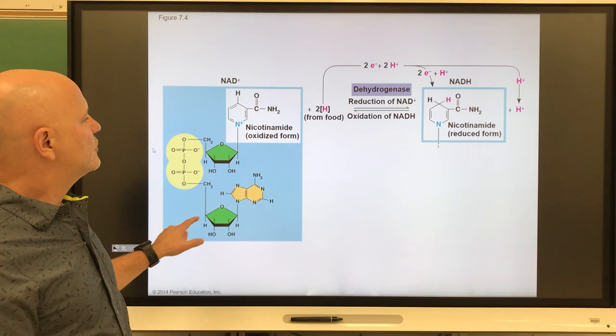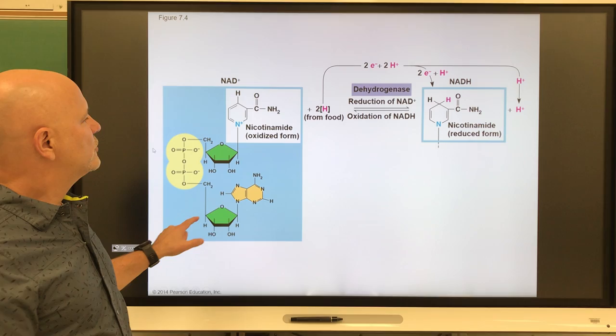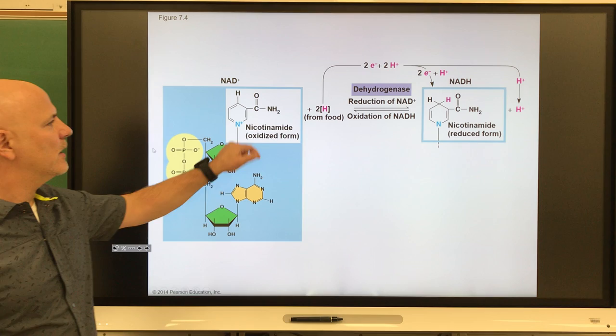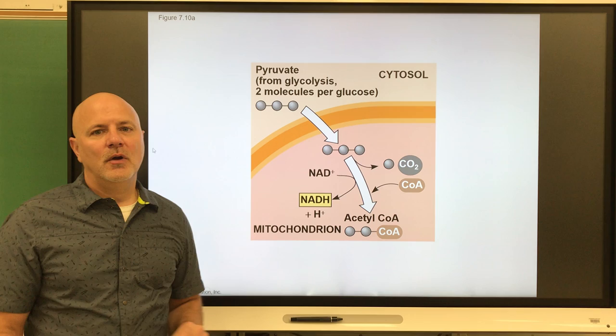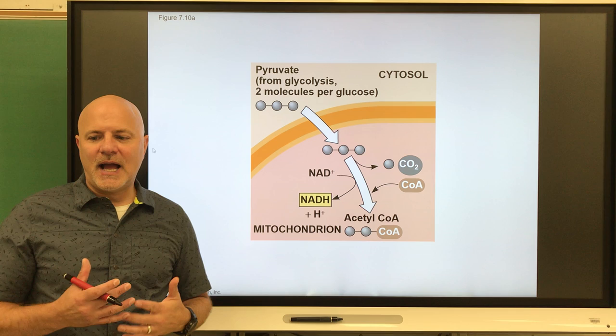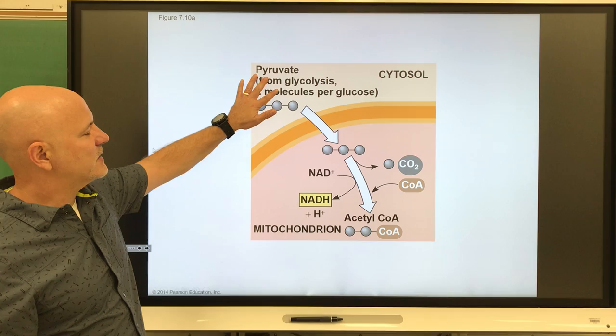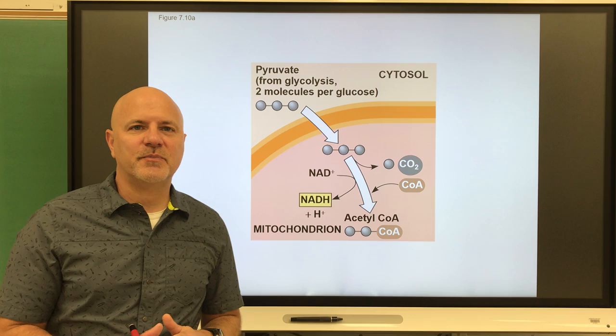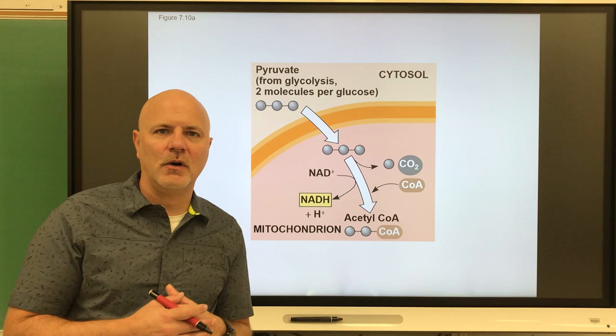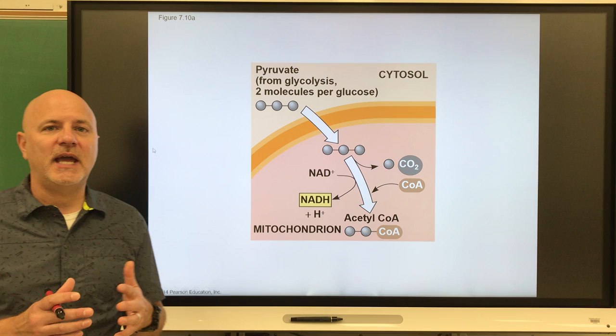The next reaction is called the transition reaction. This reaction occurs within the mitochondria — specifically in the matrix — and it oxidizes pyruvate with the release of carbon dioxide. Glycolysis occurred out in the cytoplasm; now we're within the mitochondria. This step only occurs if oxygen is present — it does not require oxygen directly, but it won't occur if oxygen is not there. Everything occurs twice because we had two pyruvates out of glycolysis.